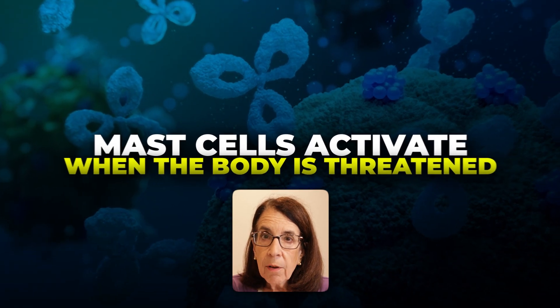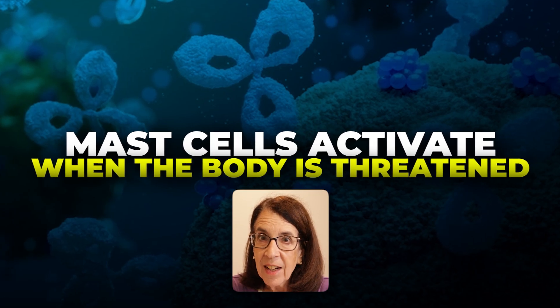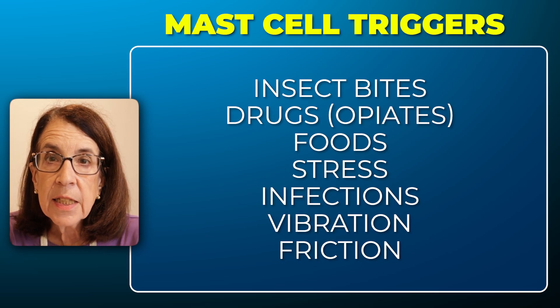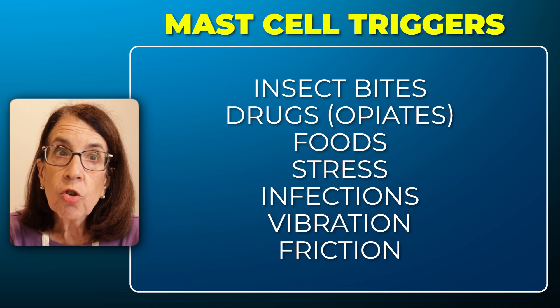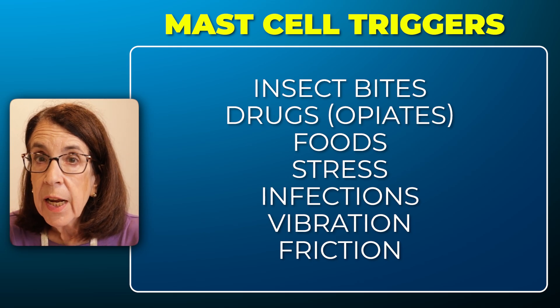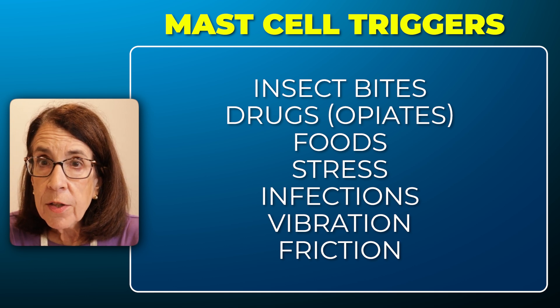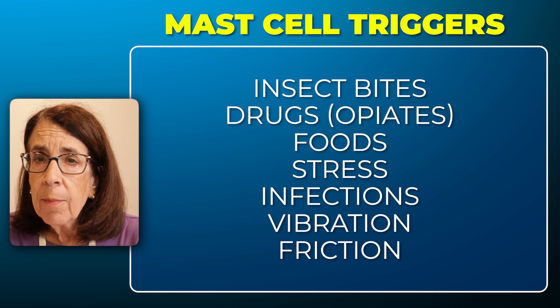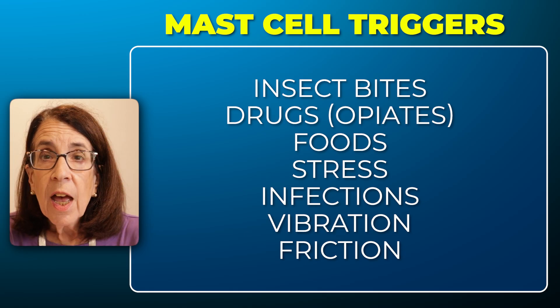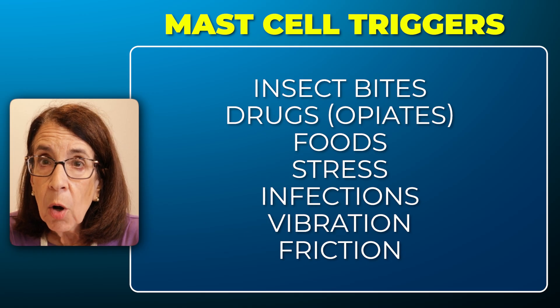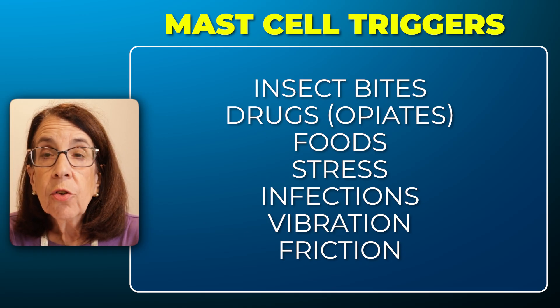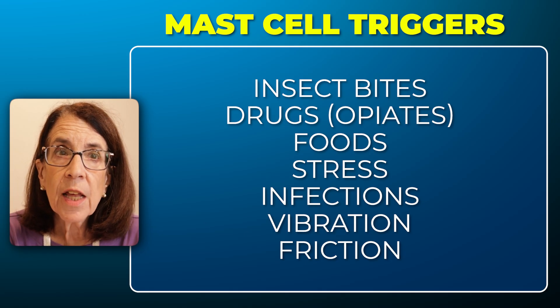Whenever there's a threat to the body, the mast cells get activated. We can see mast cells being triggered in response to, for example, insect bites or venoms like a bee sting. They may react to certain drugs — particularly opiate medications are triggers for mast cells. Certain foods cause mast cells to activate, and we also know that mast cells may react in response to physical or emotional stress, as well as infections and physical stimuli like vibration and friction.